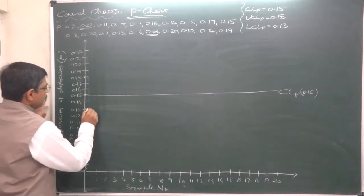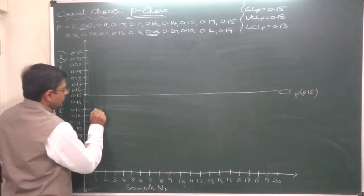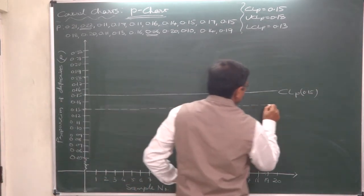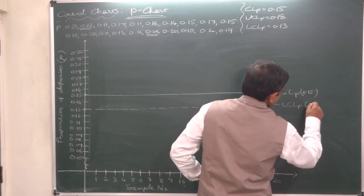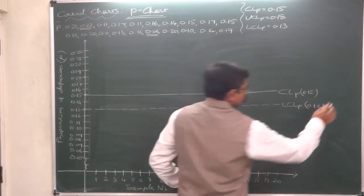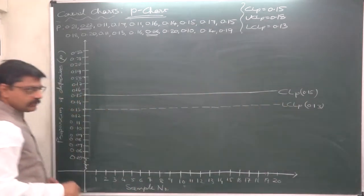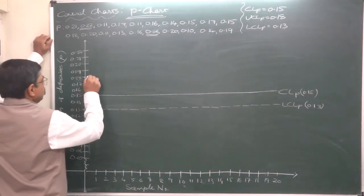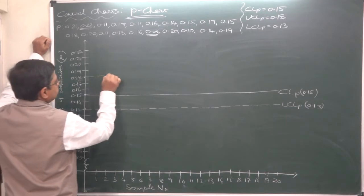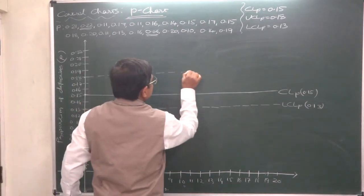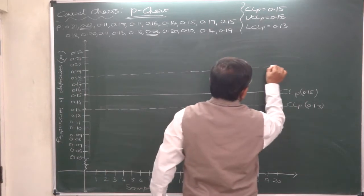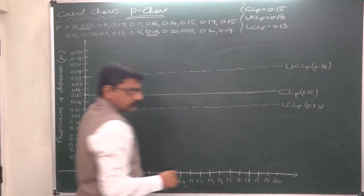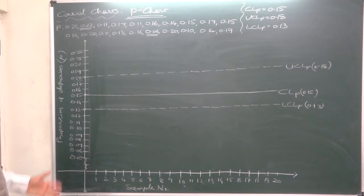The lower control limit and upper control limit are drawn as dotted or broken lines. The lower control limit is 0.1295, and the upper control limit is 0.18 — which was 0.1779, rounded off.